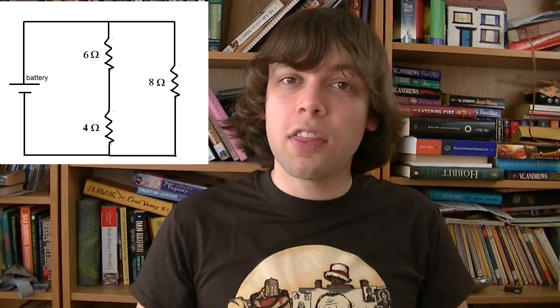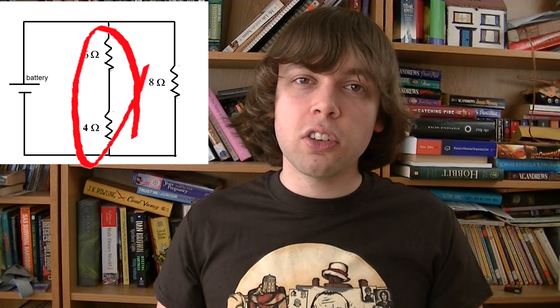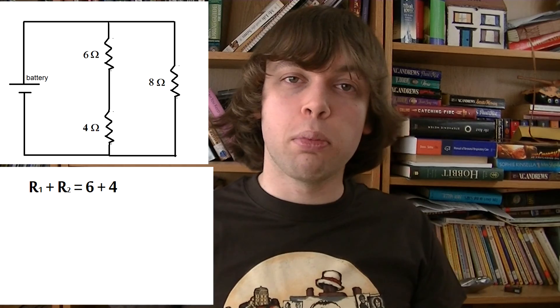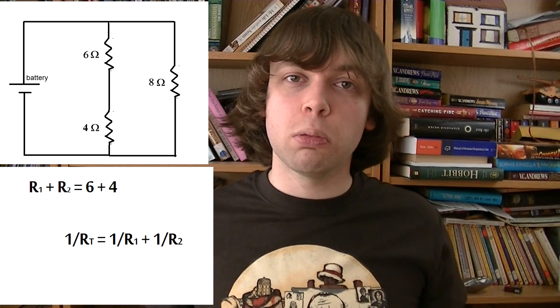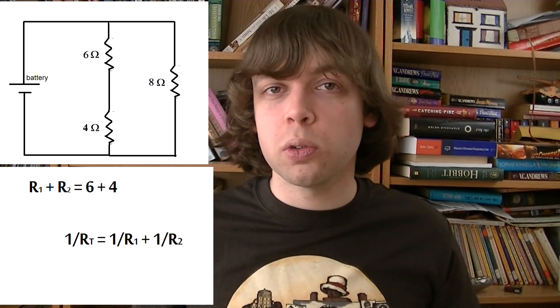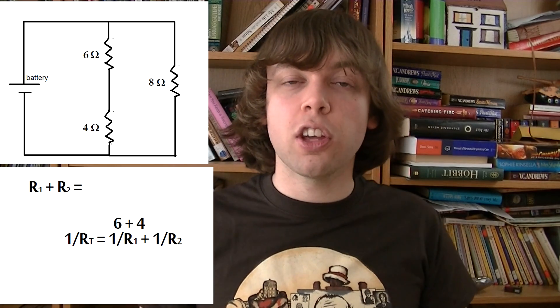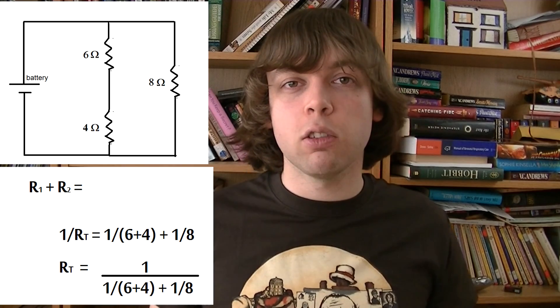However, sometimes you have to combine those two equations together, like this for example. These two resistors are connected in series, so you can just add them up. That will give you the total resistance of the branch. But then you have to use the reciprocal equation to calculate the total resistance of the circuit as a whole. And then plugging these numbers in, you can solve for the total by taking the reciprocal of both sides. It's kind of like a reciprocal cancels out a reciprocal.